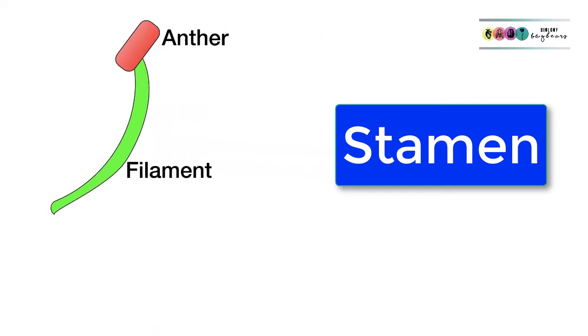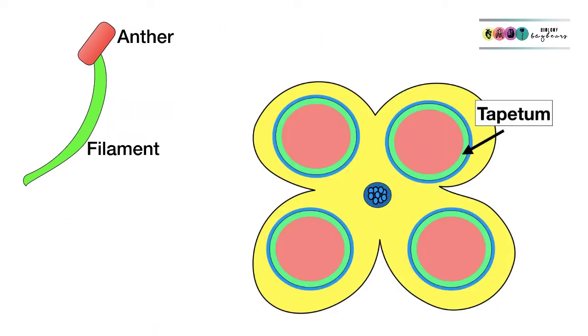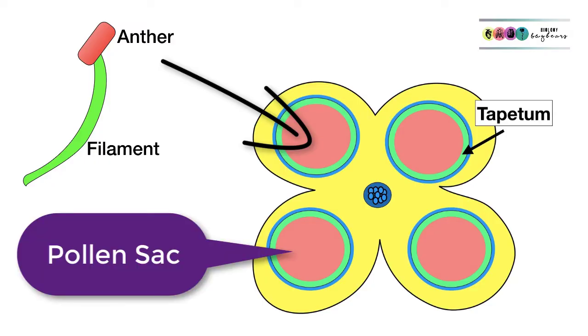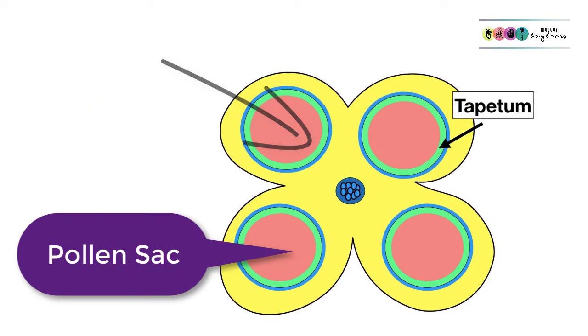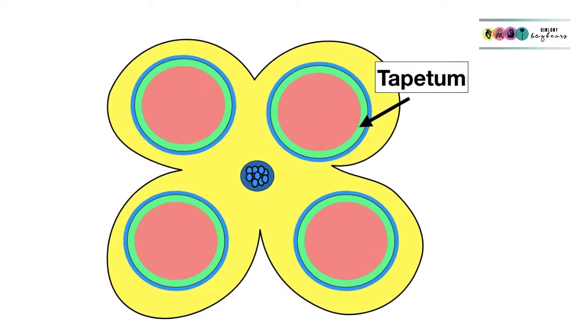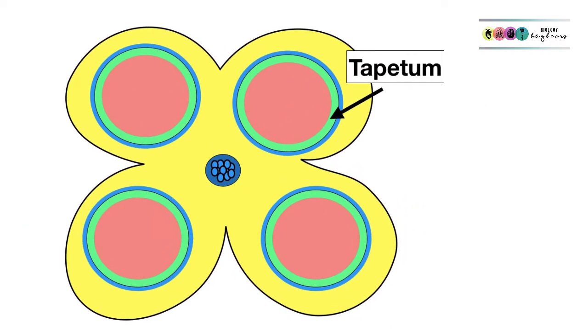It's the anther that we're really interested in. This is where pollen grain formation takes place and if you were to chop off the top of an anther and look inside, you would see that it's made up of four chambers and each one of these four chambers is known as a pollen sac. So it's really important that you get familiar with this diagram and can discuss what's inside the anther.